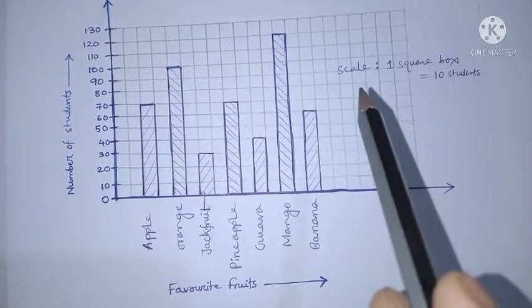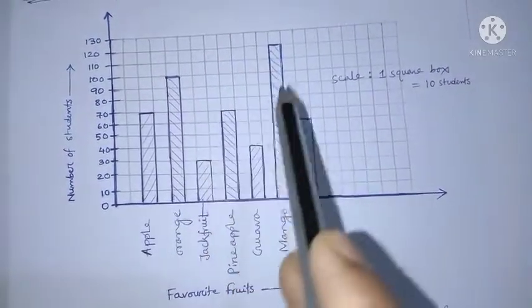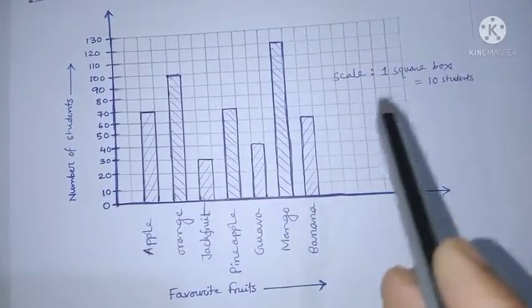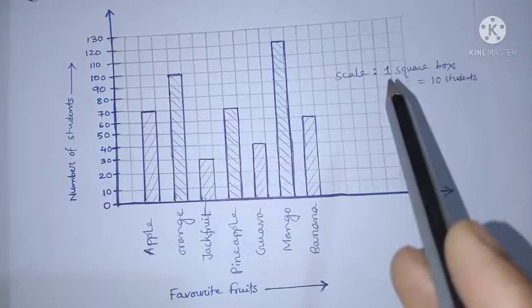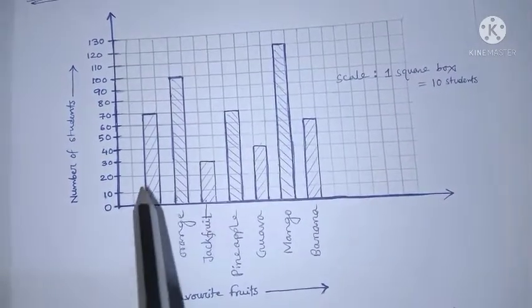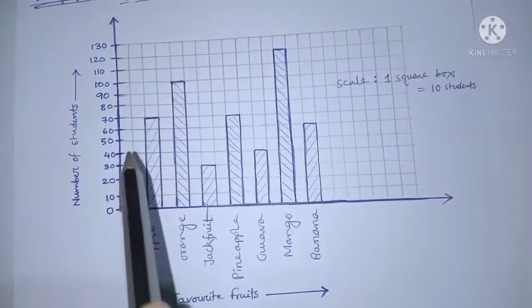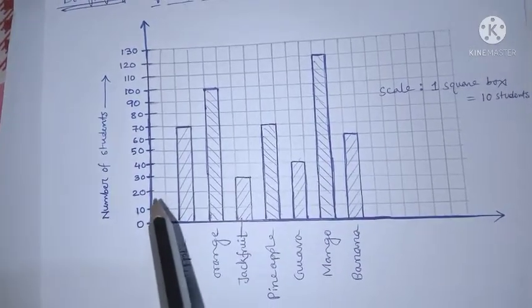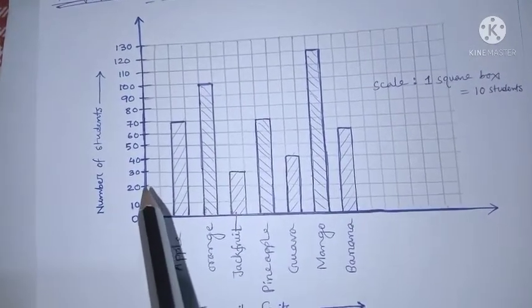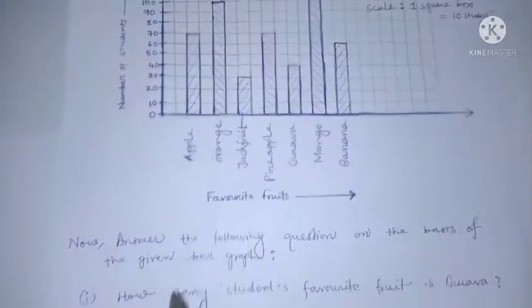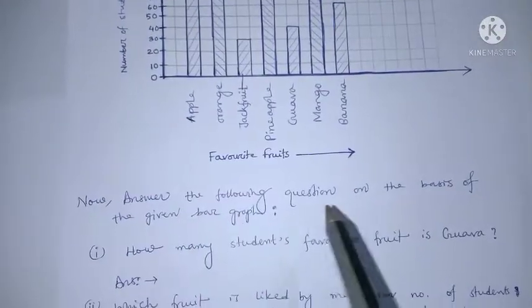The horizontal axis represents favorite fruits: apple, orange, jackfruit, pineapple, guava, mango, and banana. On the graph paper, each square box equals 10 students. On the basis of this bar graph we have to answer some questions.